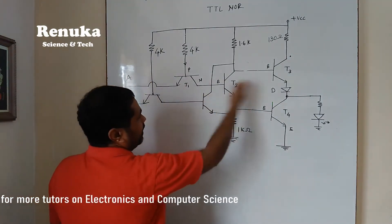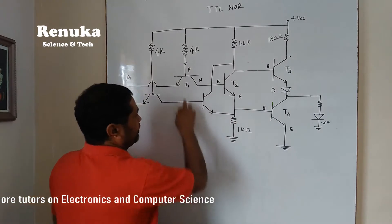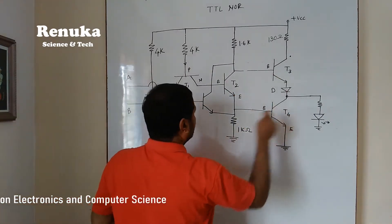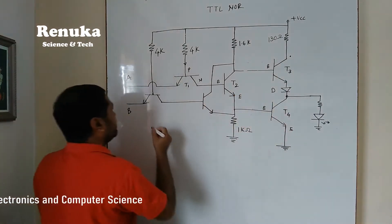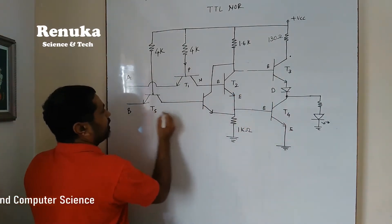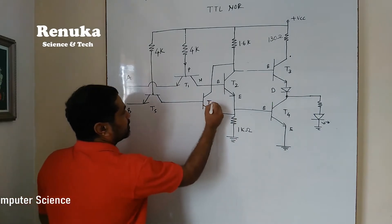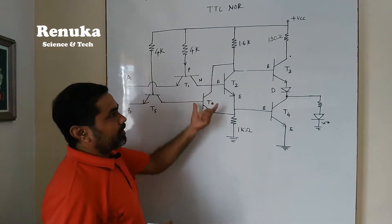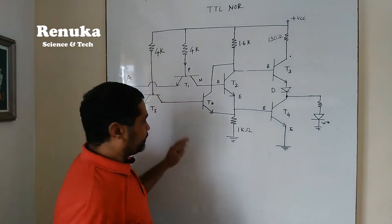We have already named the existing transistors T1, T2, T3, T4. Let us name these new transistors T5 and T6. So this circuit will work like a NOR gate.